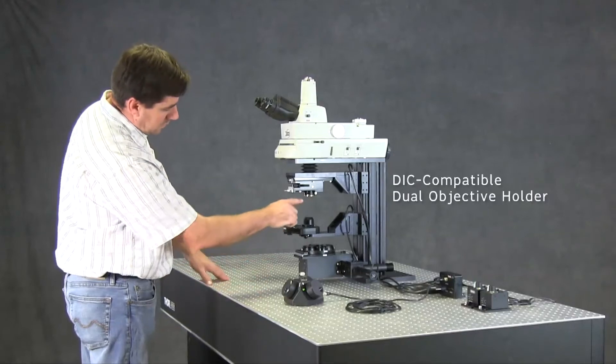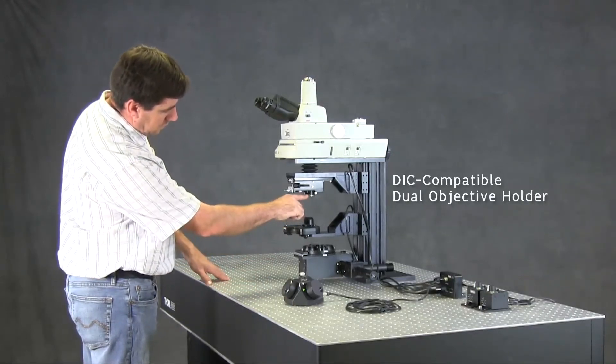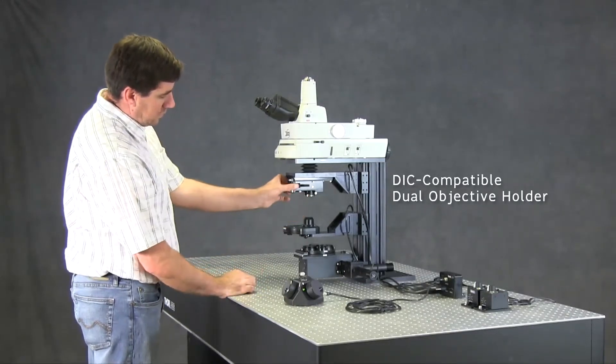The dual objective holder has two positions, both of which have a slot for a DIC objective prism.